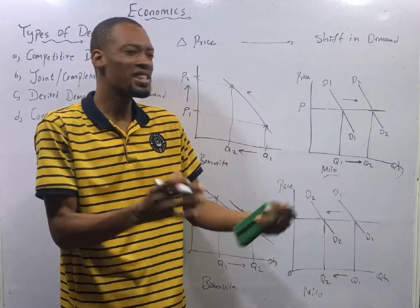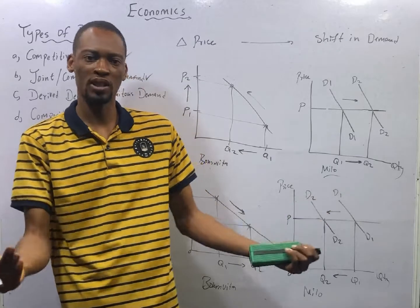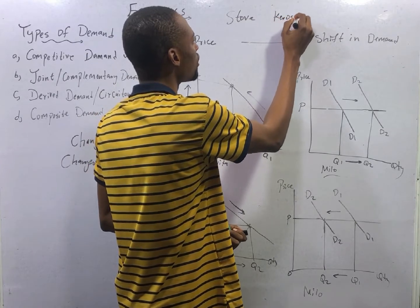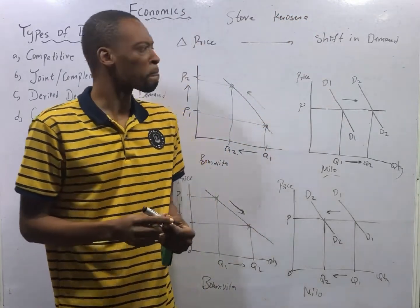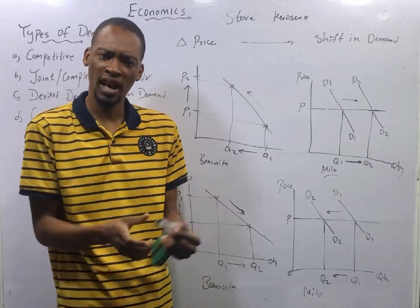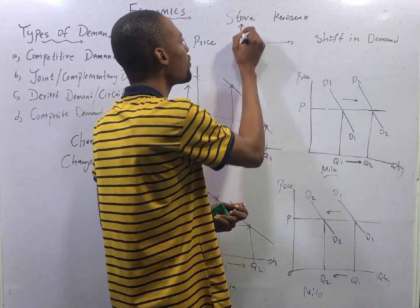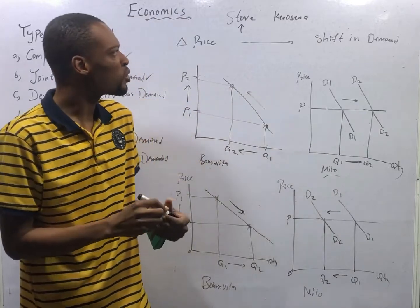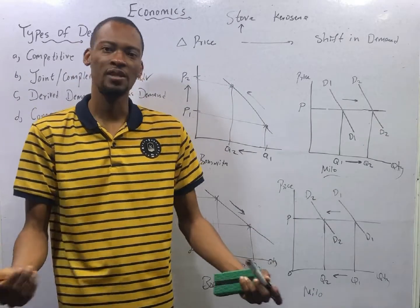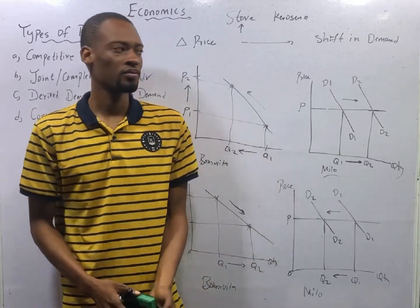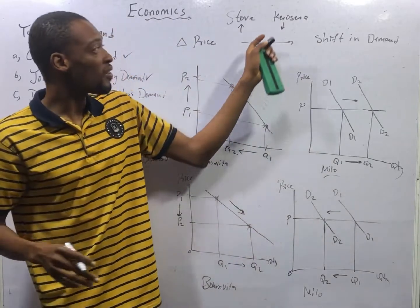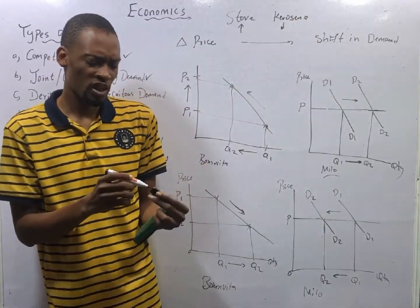Joint demand is the demand for two commodities that satisfy a particular need together. For example, stove and kerosene — stove needs kerosene for cooking. If the price of stove goes up, the demand for stove will reduce. People will be buying stove less. And what happens to kerosene? The demand for kerosene will also reduce.